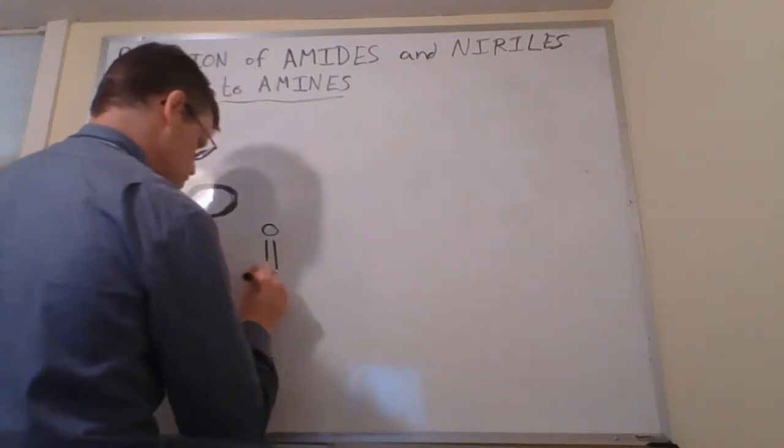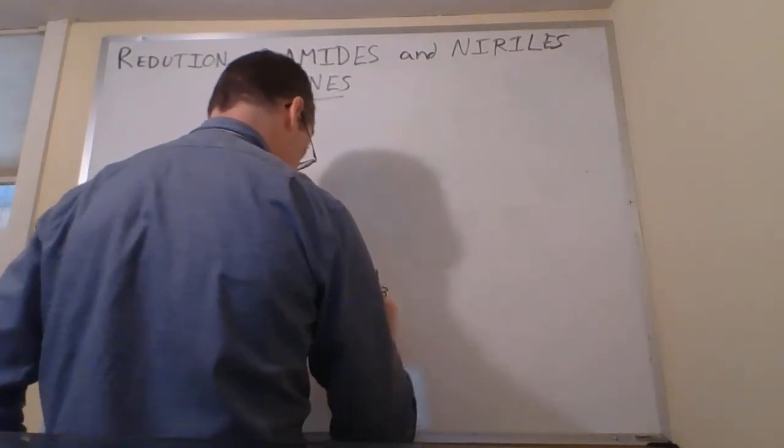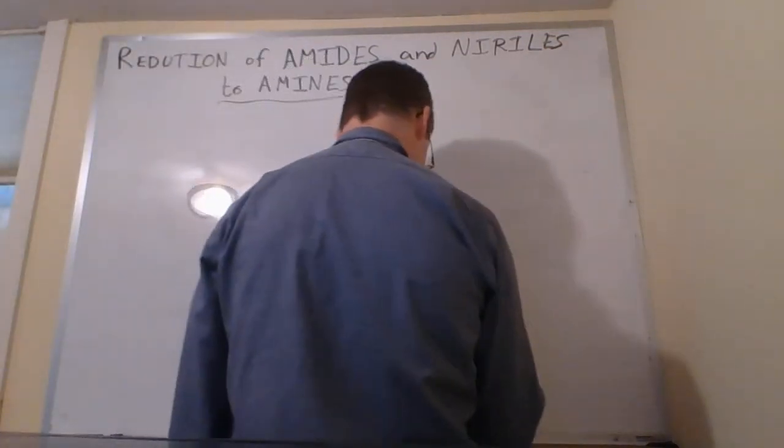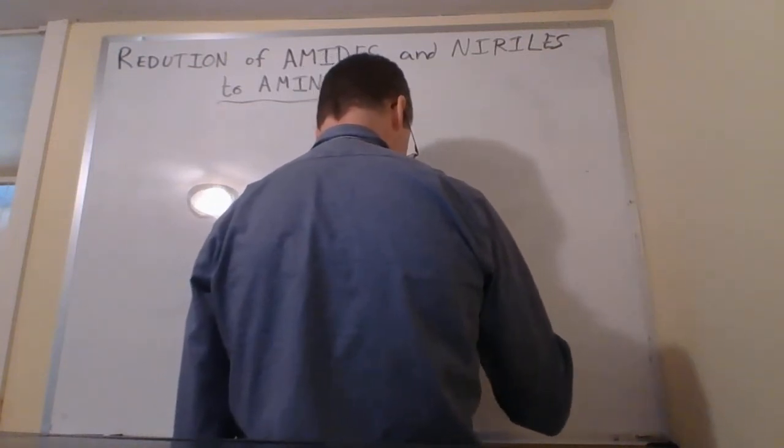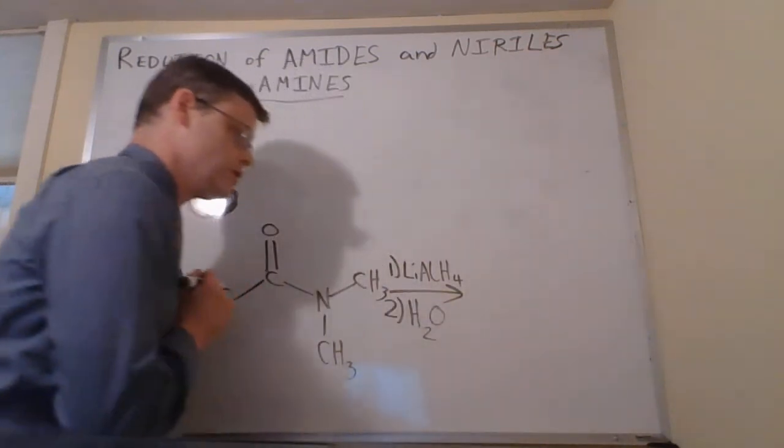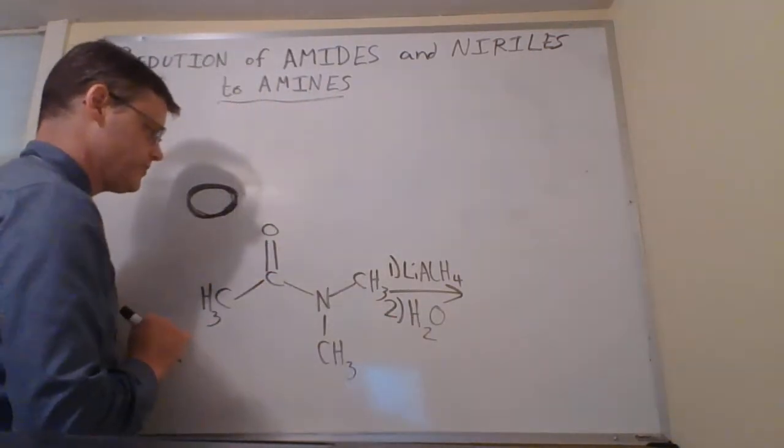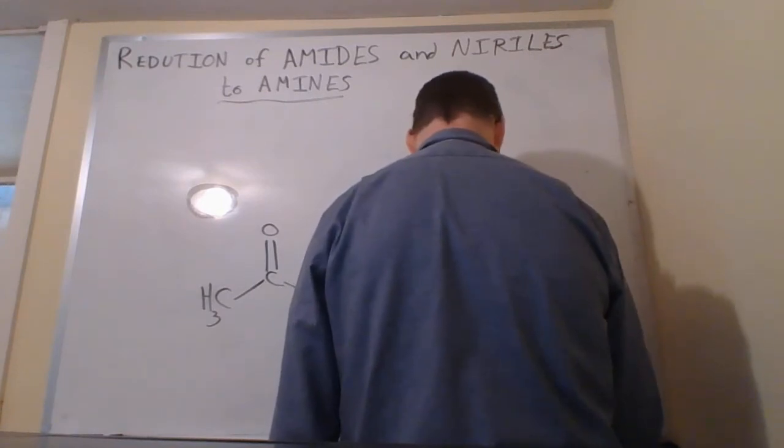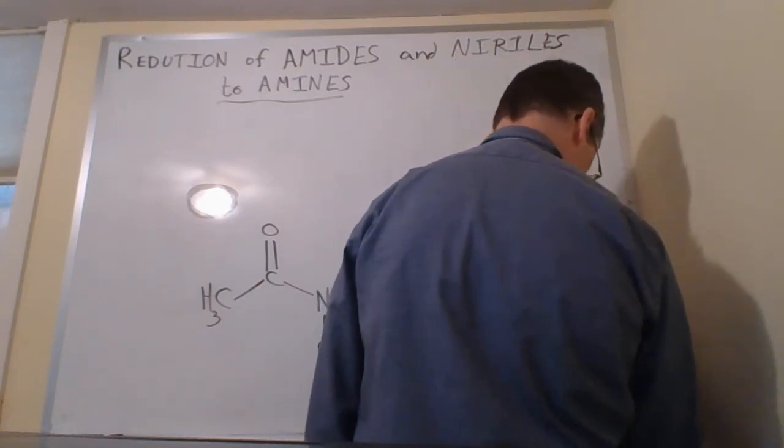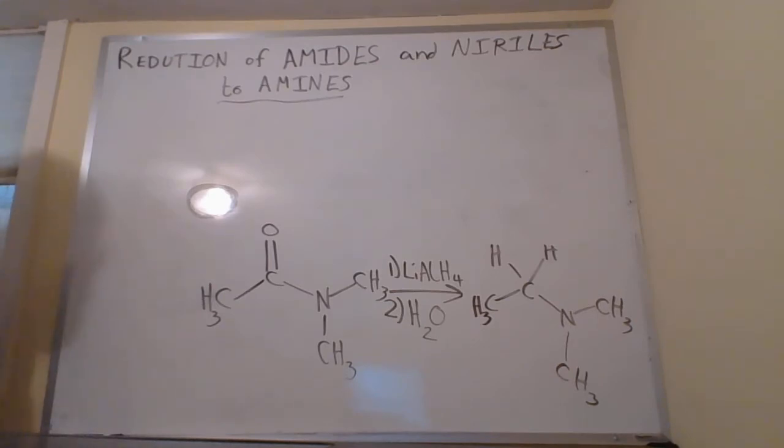So we can reduce primary, tertiary, or secondary amides, like this one, to make primary, tertiary, or secondary amines. The reagents we're going to use: we're going to start with the first step that has lithium aluminum hydride, and then the second step, which is a water workup, H2O here. And what we're going to do is we're essentially going to lop off that oxygen and replace it with two hydrogens. And you can see we make a tertiary amine here.